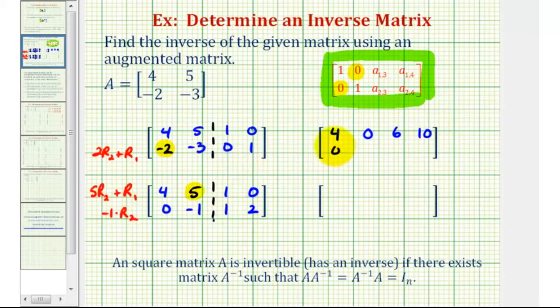Now for the second row we'll have 0, positive 1, negative 1, negative 2. And now for the last step, we want this first element here to be positive 1. So we'll replace row 1 with 1 fourth times row 1.